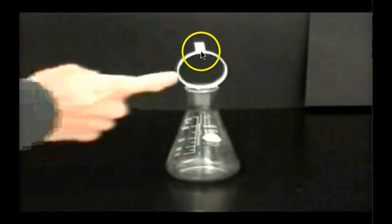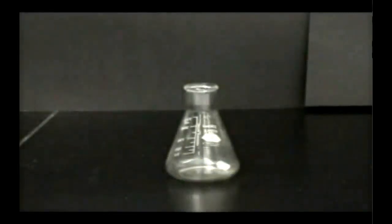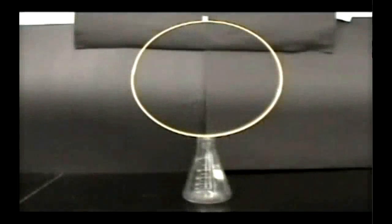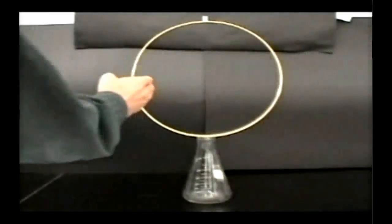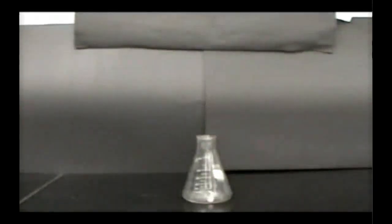There will be some force from friction on this, but that force is not enough to overcome the inertia of the object, which wants to keep it sitting still. Once the ring is gone, gravity acts on it and it simply falls in the flask. And we can see this again with a bigger version of it just to let you see that it is in fact falling straight down.